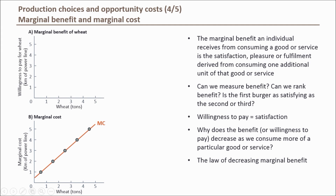In our example we'll measure the benefit of wheat consumption in terms of power lines — in other words, how many kilometres of power lines would give the economy as much benefit as consuming an extra ton of wheat? Or what is the willingness of the economy to pay in terms of power lines for more wheat consumption? In Figure A we are going to illustrate the marginal benefit of wheat. Generally, marginal benefit values will be given to you in a test or question, either in the form of a table, graph, or formula.